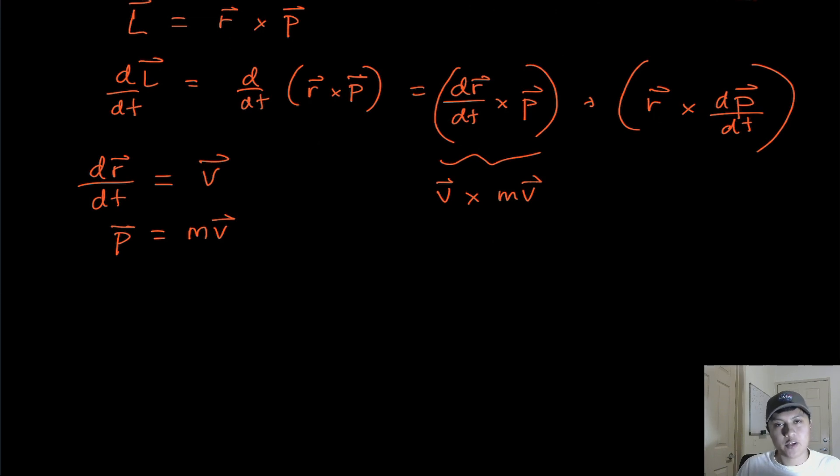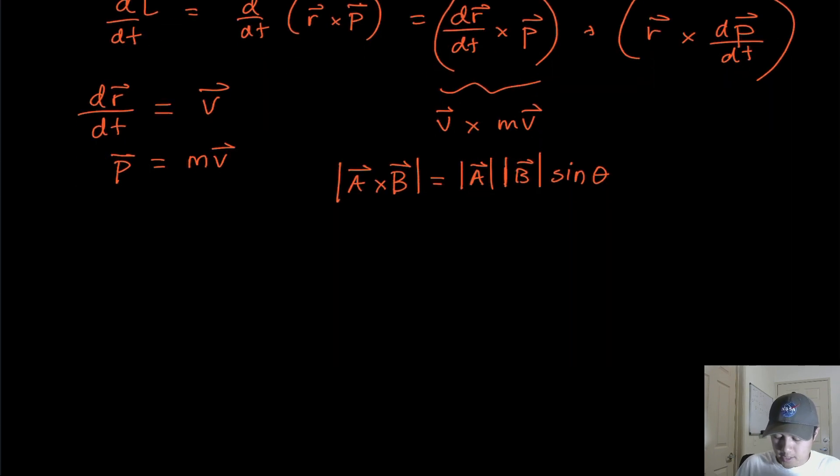And so this part right here can be rewritten as V cross M V. And now we can recall the definition of the cross product. And remember that the magnitude of the cross product, if you have the magnitude of A cross B, that ends up being the magnitude of A times the magnitude of B multiplying the sine of the angle between those two vectors.